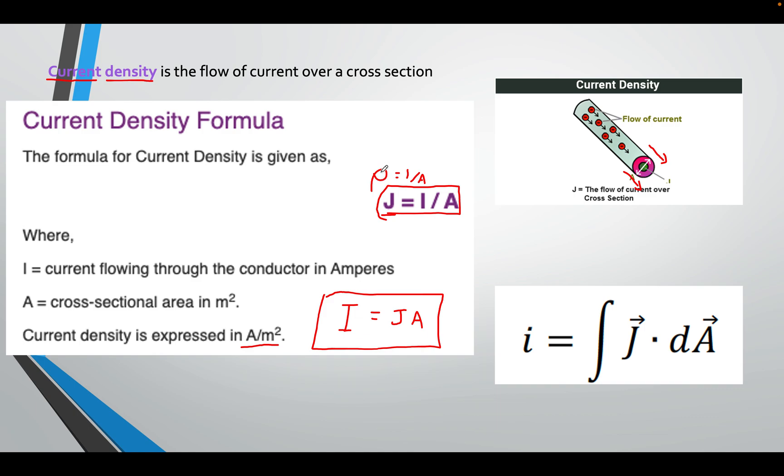J is I over A. The area is the cross-sectional area we were talking about in resistivity. The amount of electrons, in this case, 1, 2, 3, 4, 5, 6 electrons, flowing through whatever my area is.